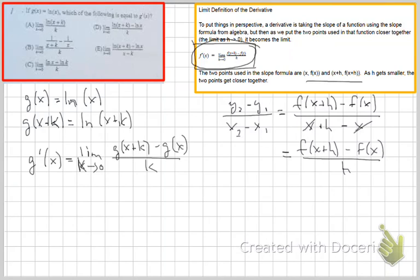And if we substitute in the expressions that we have up here into our expression, we get the limit as k goes to 0 of ln of x plus k minus ln of x all over k. And that is answer choice D.